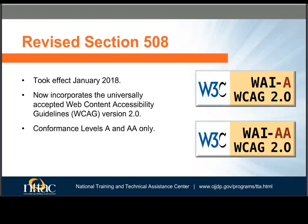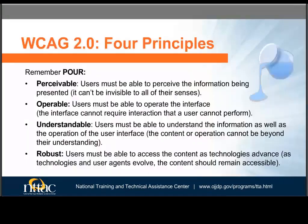Section 508 was revised in 2016 and the new standards took effect in January 2018. The web portion of the law now points to version 2.0 of the World Wide Web Consortium's Web Content Accessibility Guidelines, or WCAG 2.0 for short. WCAG 2.0 has three levels of conformance. Section 508 requires only levels A and AA, which are easier to implement and help the greatest majority of users. Level AAA is more difficult to implement and affects fewer users. A good way to remember WCAG 2.0's four principles is the acronym POUR: ICT must be perceivable, operable, understandable, and robust.